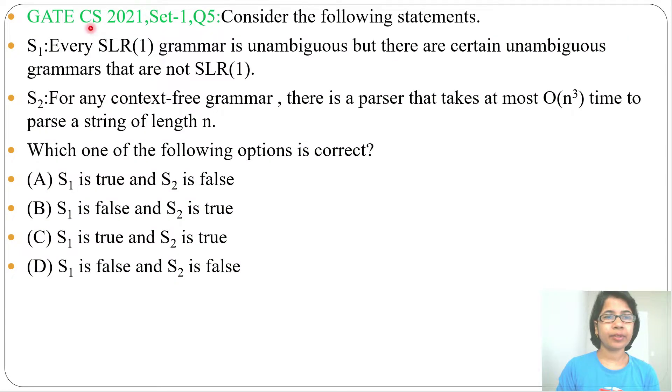Hi, let's solve one previous question of parsing. This question was asked in GATE CS 2021 Set 1 Question Number 5. Consider the following statements. Two statements are given. Which one of the following options is correct? Four options are given.